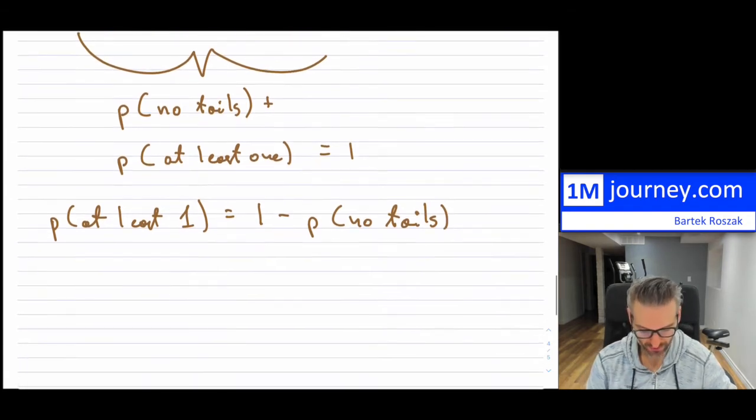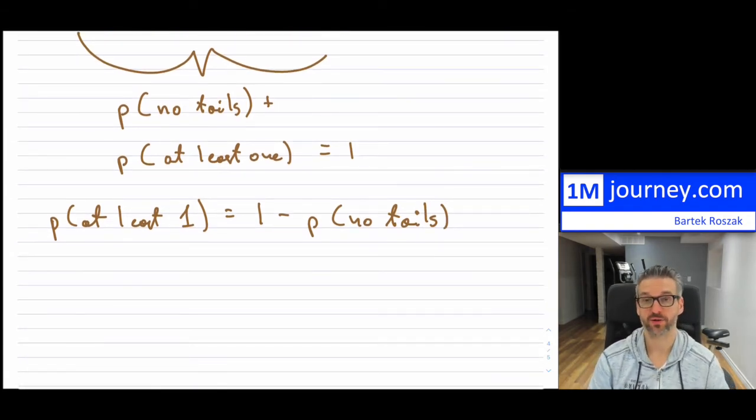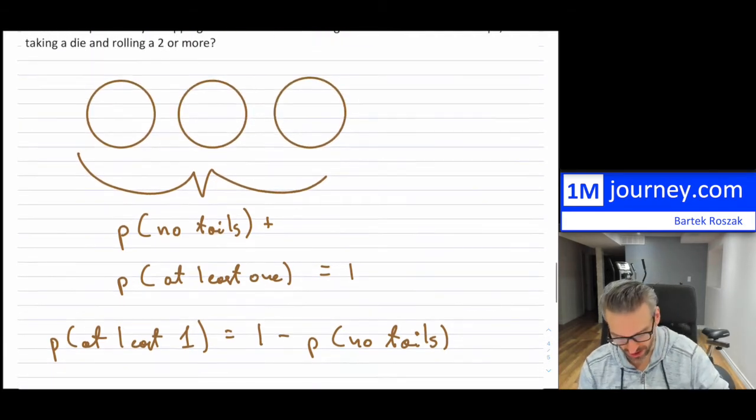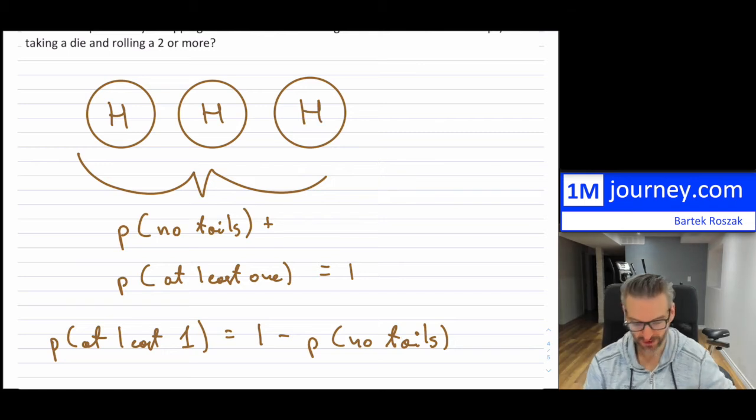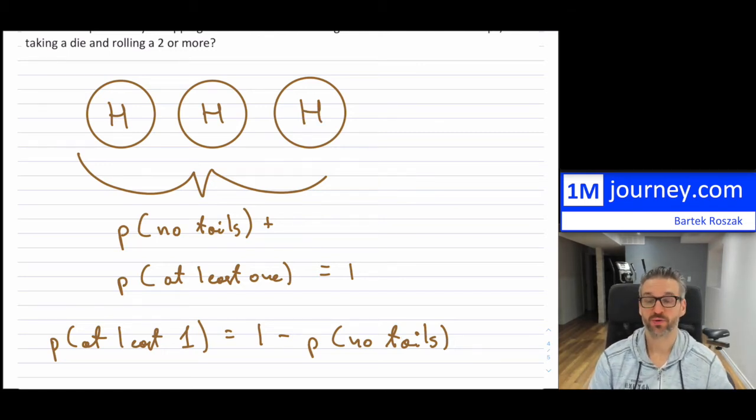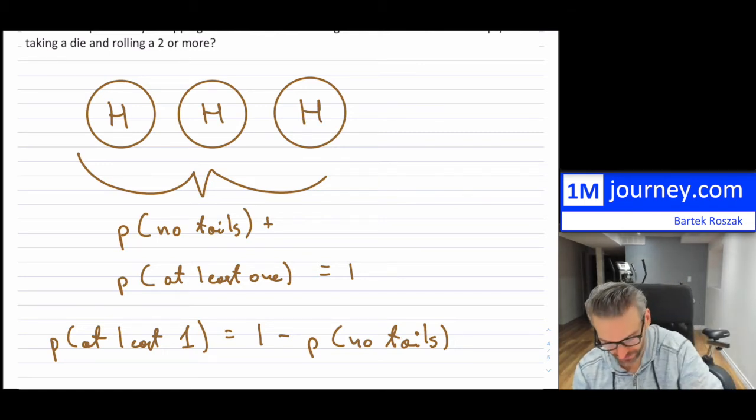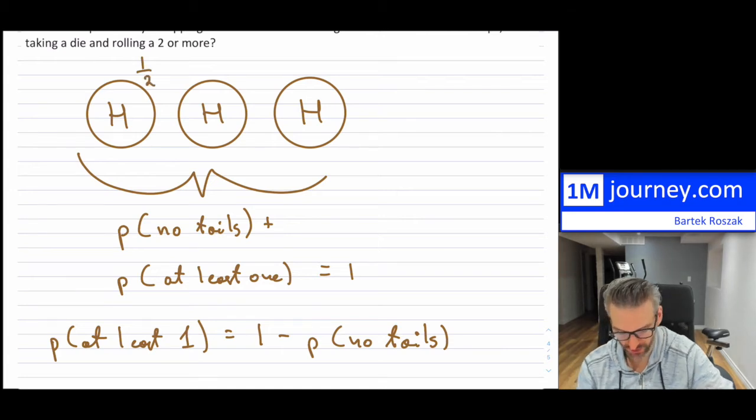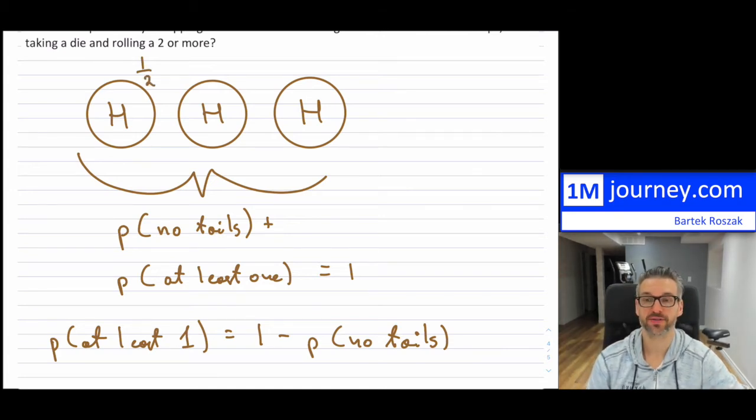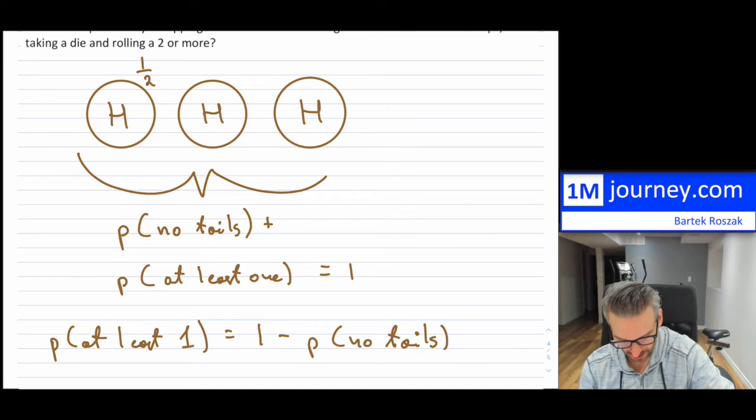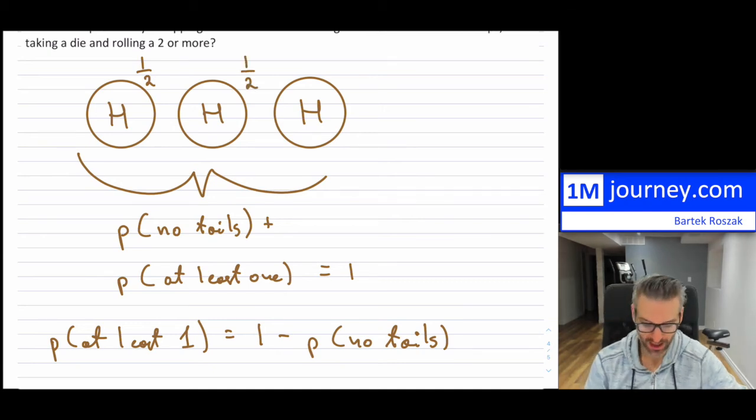Now what is the probability of no tails? Well, that means that on all flips, we got heads. So we would get heads here, heads here, and then heads here. So what's the probability of that? Well, the probability on the first toss is one half because it's either tails or heads, and then one half again, and then finally one half again.